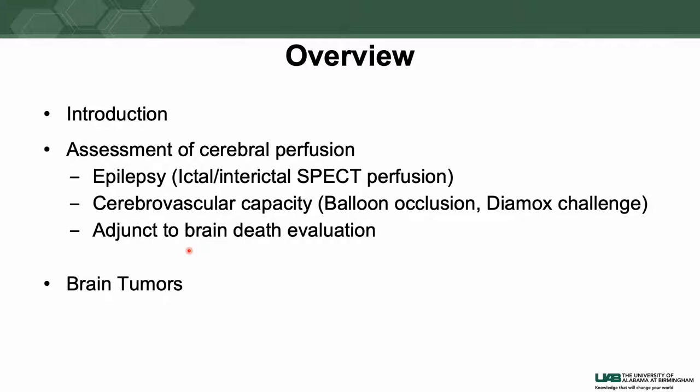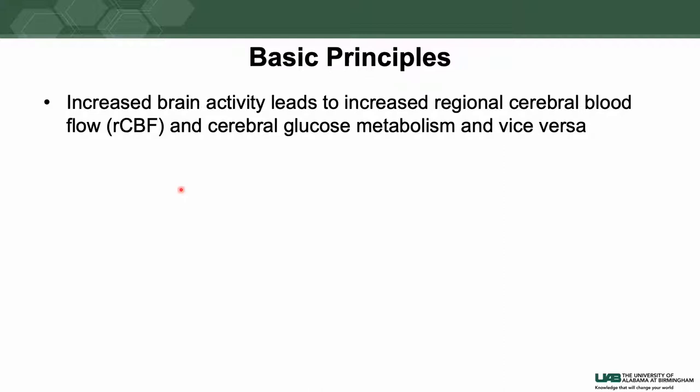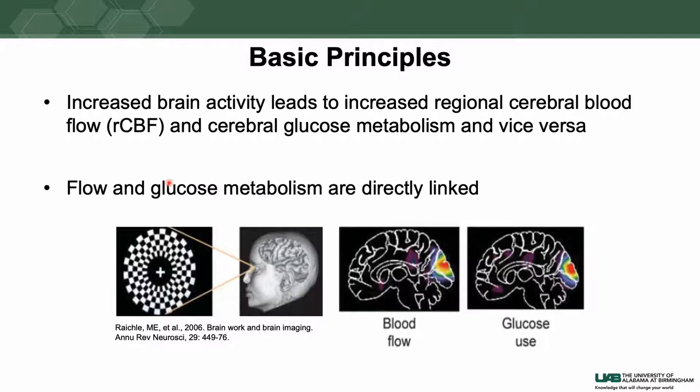The basic principle behind SPECT perfusion is that increased regional brain activity leads to increased regional blood flow and cerebral glucose metabolism, and vice versa — decreased activity results in decreased perfusion and blood flow. Blood flow and glucose metabolism are directly coupled. For example, in this human subject, the eye was stimulated with a checkered board diagram, resulting in stimulation of the visual cortex with resultant increased blood flow and increased glucose — these two things are coupled and directly related.